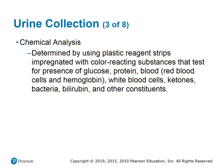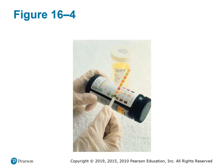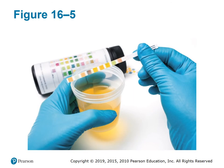With chemical analysis, it is determined by using plastic reagent strips impregnated with color-reacting substances that test for the presence of glucose, protein, blood, red blood cells, hemoglobin, white blood cells, ketones, bacteria, bilirubin, and other constituents. This test can be performed by eye or by machine; some offices use machines, others use visual reading.